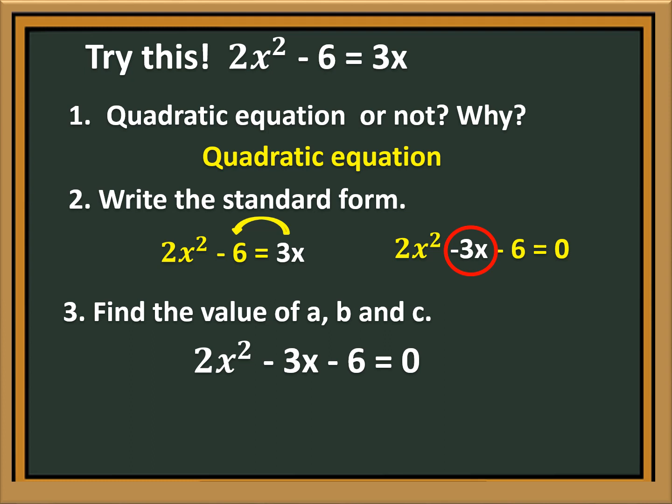In 2X squared minus 3X minus 6 is equal to 0, A is equal to 2, B is equal to negative 3, and C is equal to negative 6.